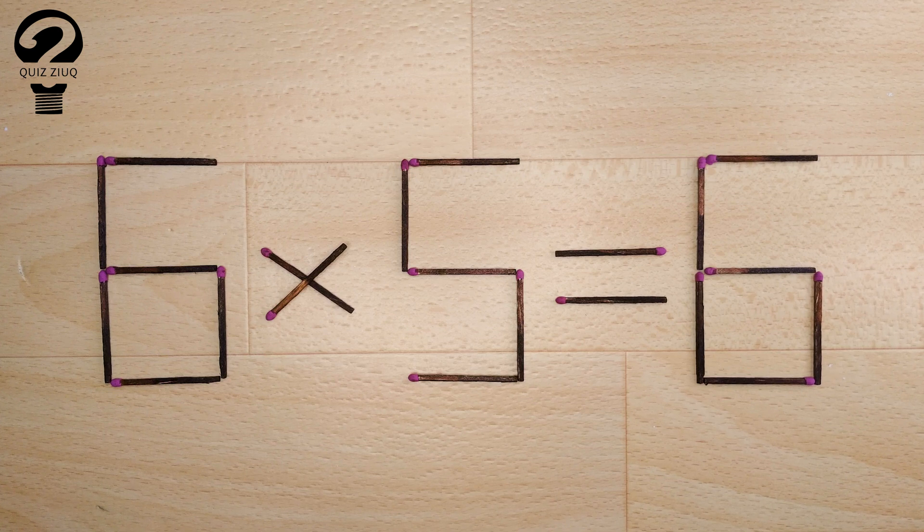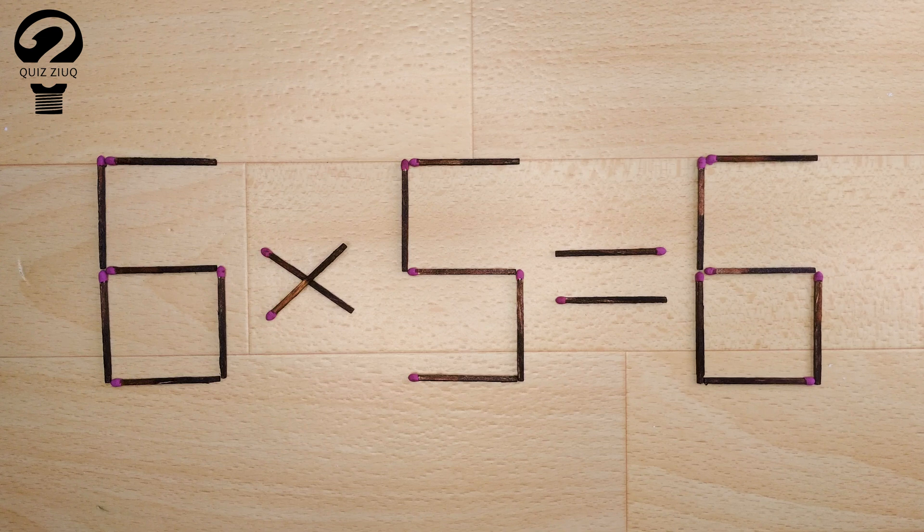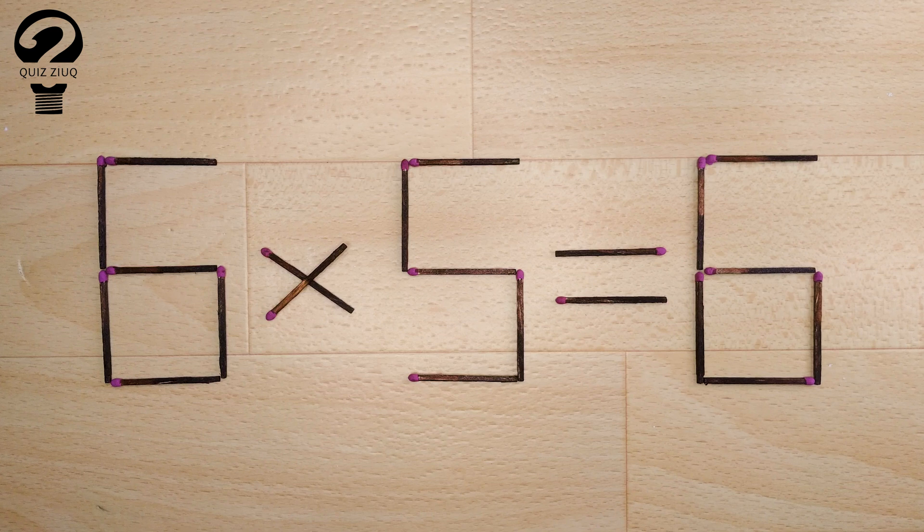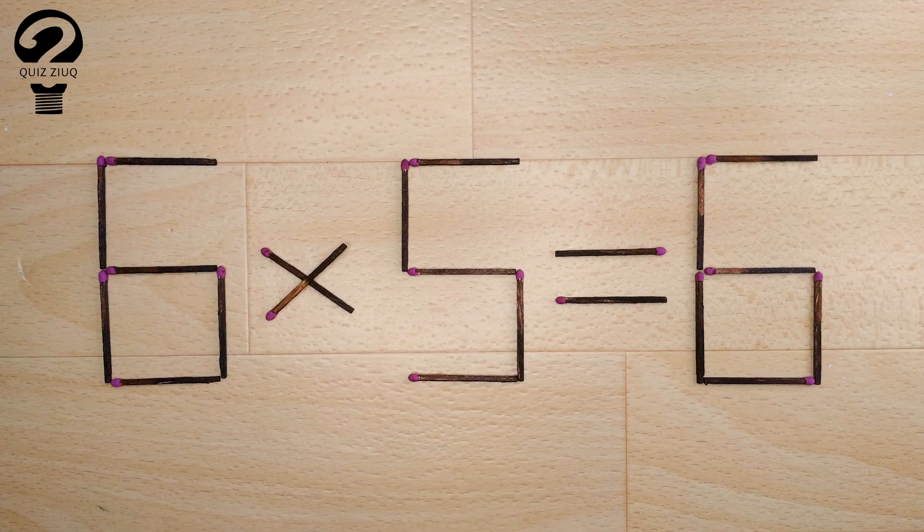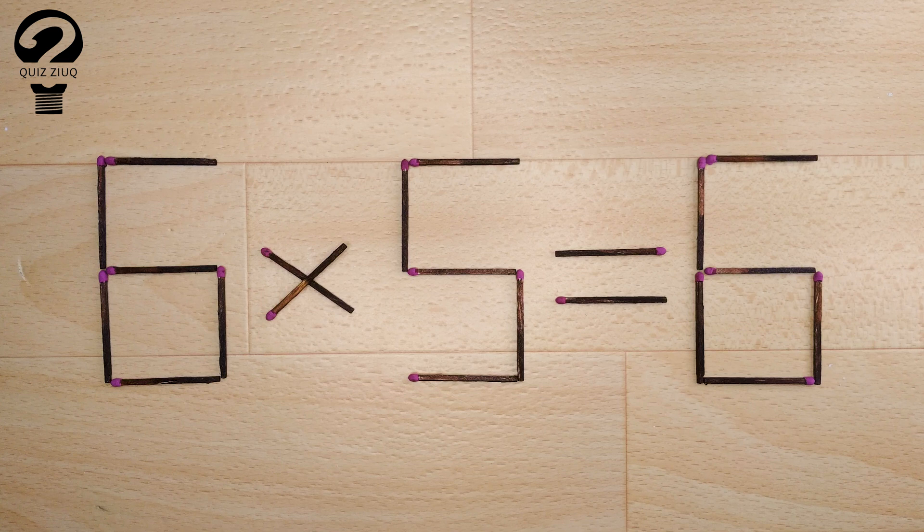Our equation is incorrect and we need to move two matches to make our equation correct. This is a fairly simple math problem that both children and adults can easily solve. Those who think logically will have no problem solving this puzzle.